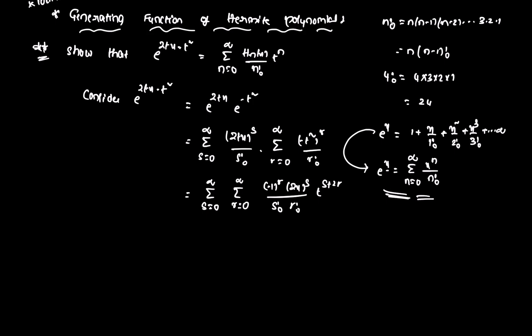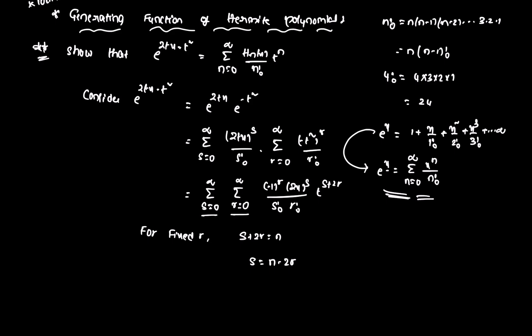We want t to the power n. We have t to the power (s + 2r), so let s + 2r = n, meaning s = n minus 2r. For fixed r, s = n minus 2r. Since s changes from 0 to infinity and r changes from 0 to infinity, we need to find the new limits. The value does not change overall.